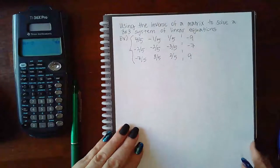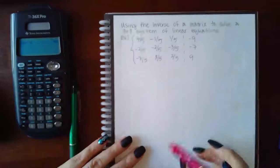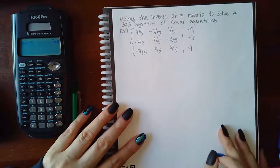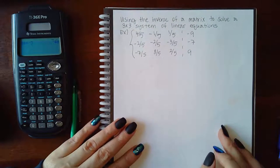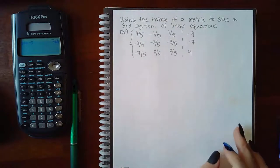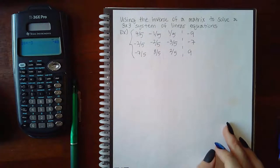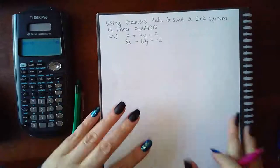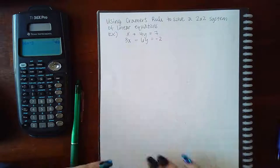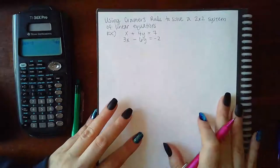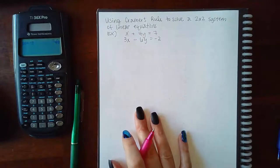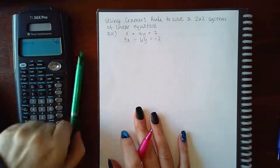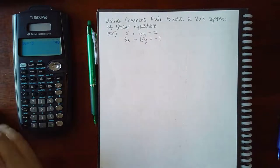Now the problem asks us to use the inverse of a matrix to solve a 3x3 system of linear equations — that's going to take a long time, so I'll come back to it at the end. For now, since we just found the determinants, we're going to use them to learn a third method for solving systems, called Cramer's Rule. Let me stop this video here since it's already been fairly long, and we'll go over Cramer's Rule next.